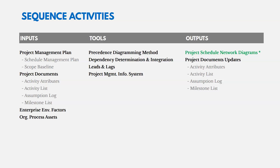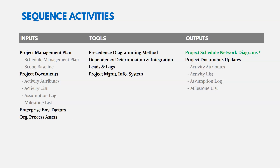The key output of Sequence Activities is the project schedule network diagram — a graphical representation of relationships among activities, produced manually or using automated project management software. A summary narrative should accompany the diagram.